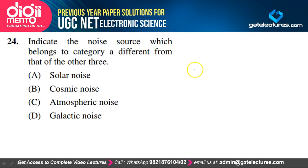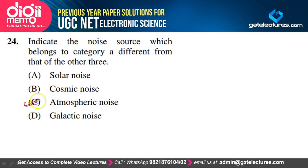The noise source that belongs to a different category: solar noise, cosmic noise, and galactic noise all have sources outside Earth's atmosphere. Atmospheric noise is the only one whose source is within Earth's atmosphere. Option C is the odd one out.